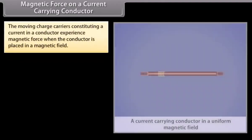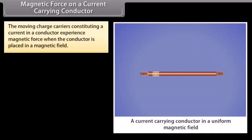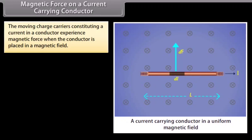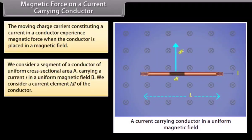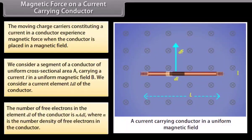Magnetic force on a current carrying conductor: The moving charge carriers constituting a current in a conductor experience magnetic force when the conductor is placed in a magnetic field. We consider a segment of a conductor of uniform cross-sectional area A carrying a current I in a uniform magnetic field B, and consider a current element I·dL of the conductor.